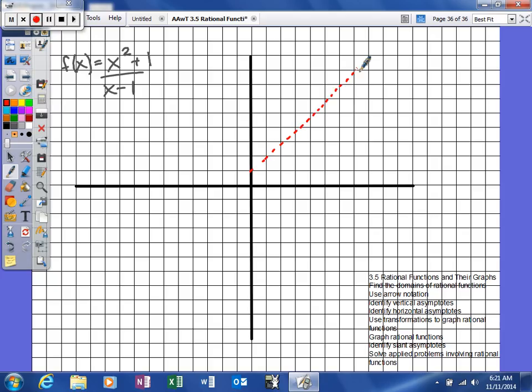If you notice, this is obviously different than the asymptotes we were dealing with before because those were horizontal or vertical lines. This time we have a line that has a slope other than 0 or undefined.